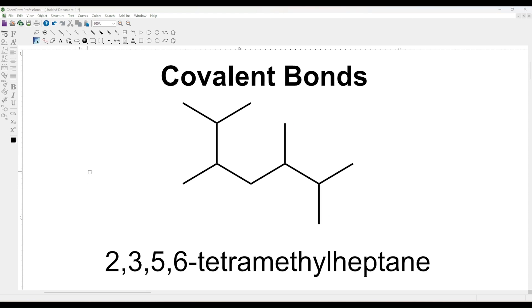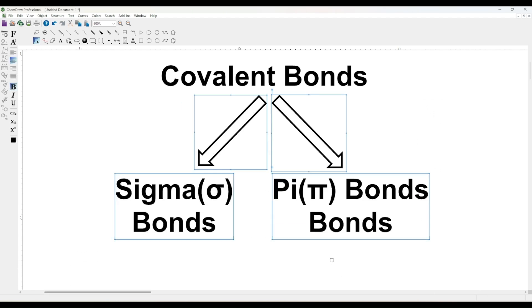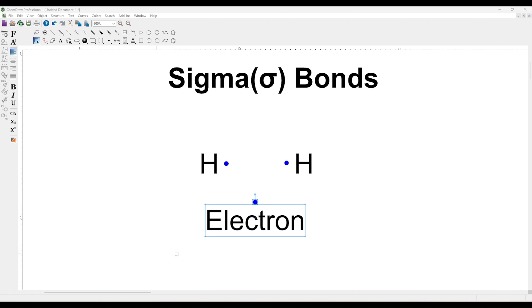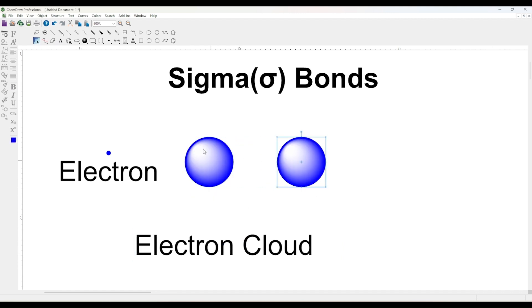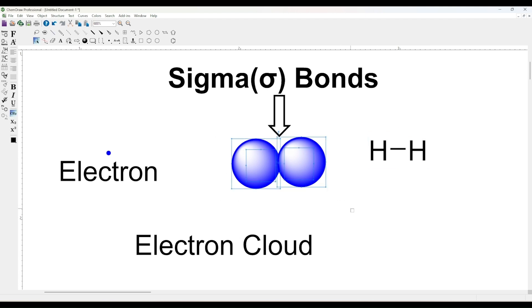These covalent bonds are further categorized into sigma and pi bonds. Sigma bonds are the strongest type of covalent chemical bond formed by the direct overlap of atomic orbitals. Sigma bonds are the first bonds to form between two atoms. When there's just one sigma bond, we call it a single bond, and they are the longest and the weakest of the covalent bonds.